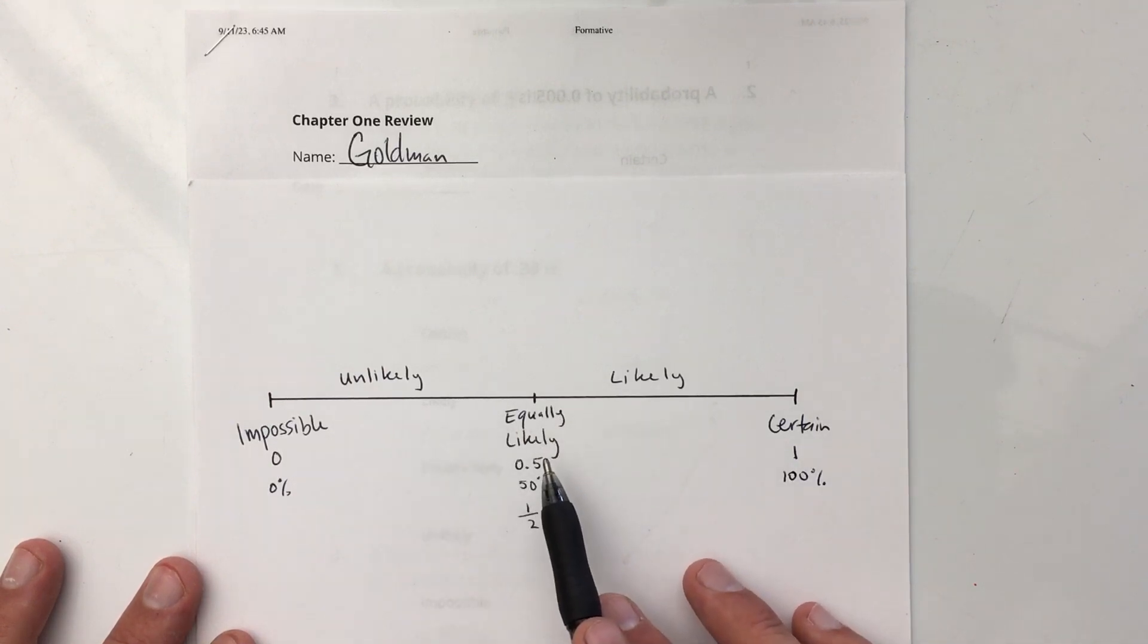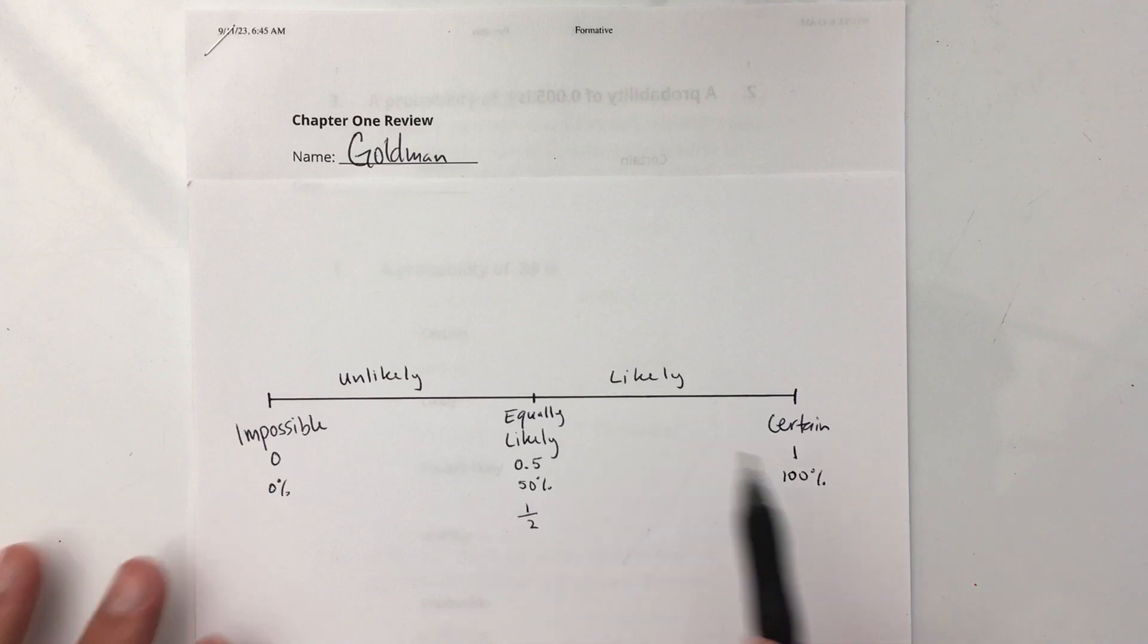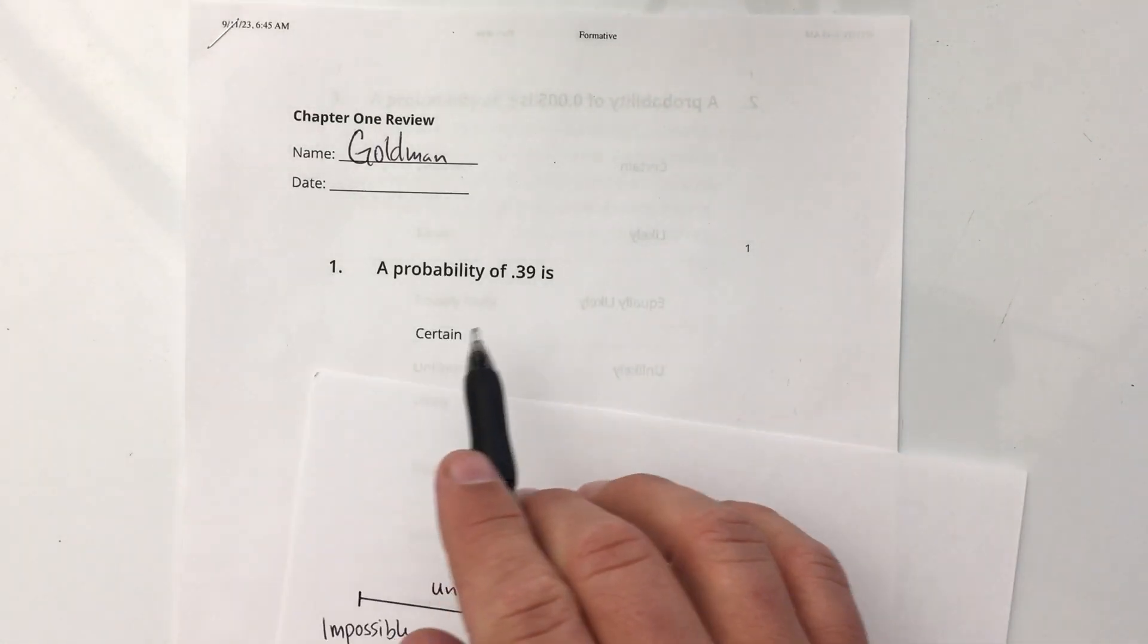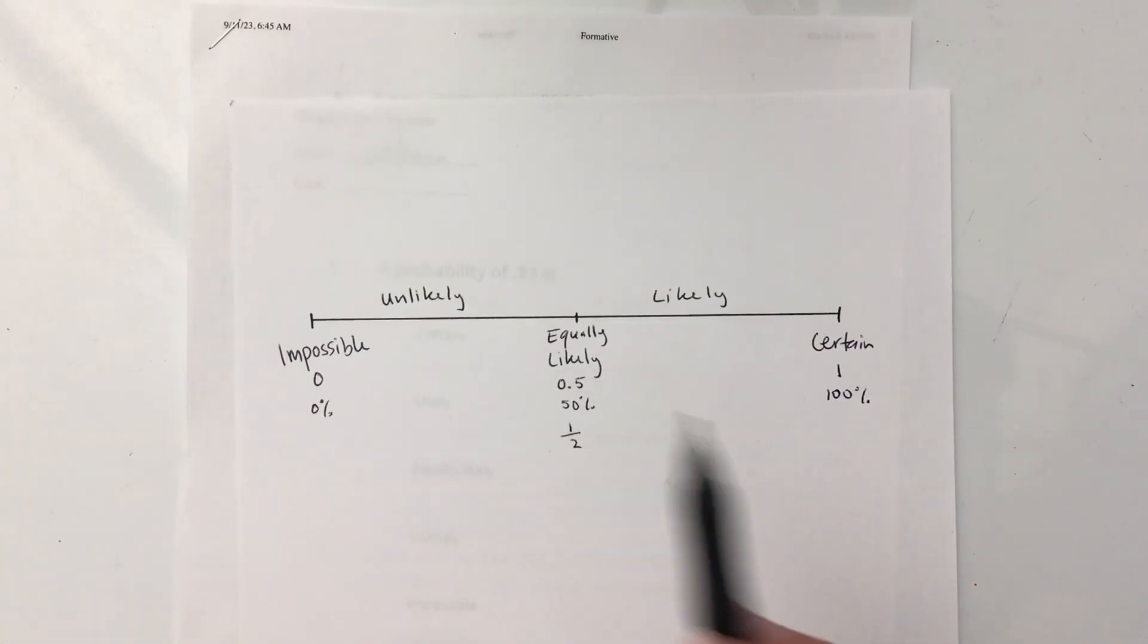Impossible at 0 or 0% or some fraction. Equally likely is 0.5, 50% or 1/2. Certain is 1 or 100%. So all these numbers we can write as either a decimal, a percent, or a fraction. It looks like all of these are going to be decimals. 0.39 is between 0 and 0.5, so it is going to be unlikely.